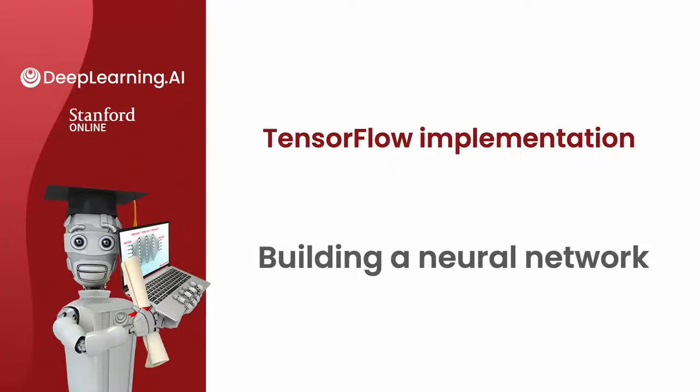So you've seen a bunch of TensorFlow code by now, learned about how to build a layer in TensorFlow, how to do forward prop through a single layer in TensorFlow, and also learned about data in TensorFlow. Let's put it all together and talk about how to build a neural network in TensorFlow. This is also the last video on TensorFlow for this week, and in this video, you also learned about a different way of building a neural network that will be even a little bit simpler than what you've seen so far. So let's dive in.